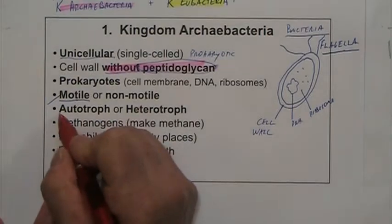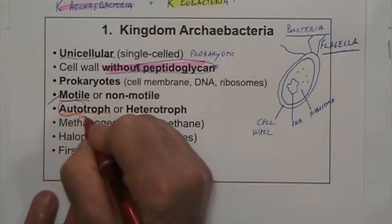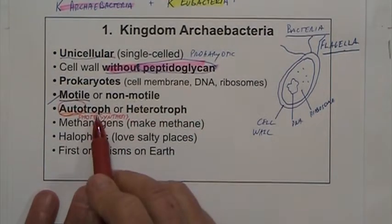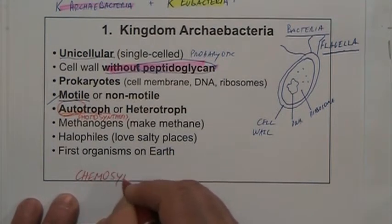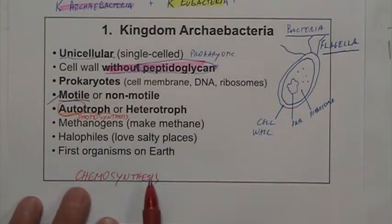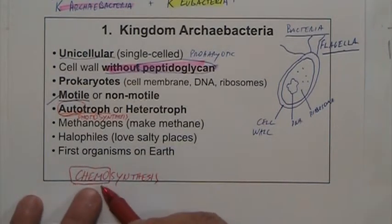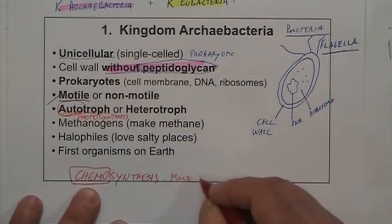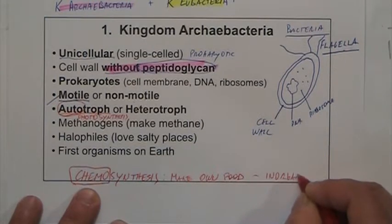These organisms can be autotrophs — auto means they make their own food, basically something like photosynthesis. There is another mechanism called chemosynthesis. Chemosynthesis is very similar to photosynthesis, but they make molecules using inorganic compounds. They make their own food using inorganic molecules.